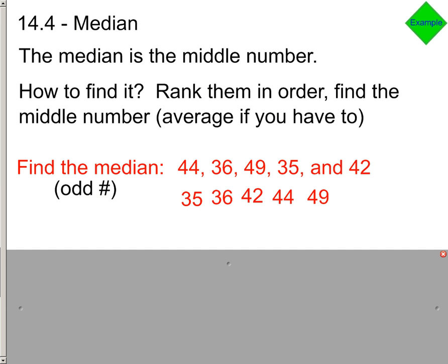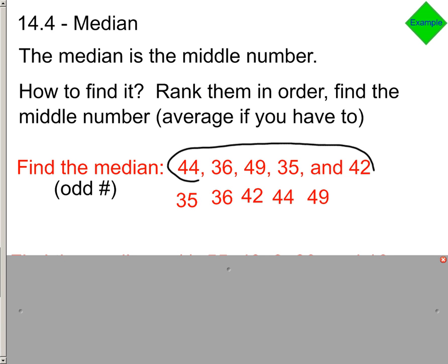There are two different types of data sets we need to look at. The first is an odd set of numbers. Here is our original set, and I put them in order from least to greatest. The best strategy is to cross out the smallest number, then cross out the largest number, and keep repeating that pattern until you have one number left over. You always have one number left over when you're working with odd numbers, so the median is 42.